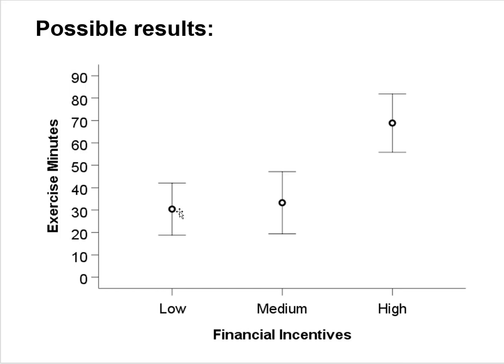At the end of the semester you'll measure the average minutes of exercise participants engaged in during a typical week — the y-axis variable. The big open dots represent mean scores for the various conditions, and the whiskers represent 95% confidence intervals for the means. An outcome like this would indicate that the high incentive group engaged in many exercise minutes per week, while the medium and low groups engaged in less.